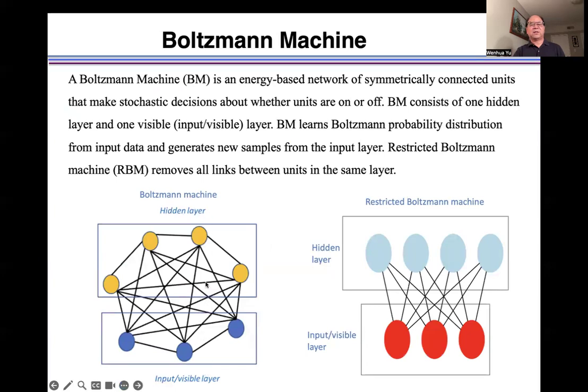All units in the network are connected symmetrically. Boltzmann machine learns Boltzmann probability distribution from an input layer and generates new samples from the input layer. Restricted Boltzmann machine removes all the links in the same layer.